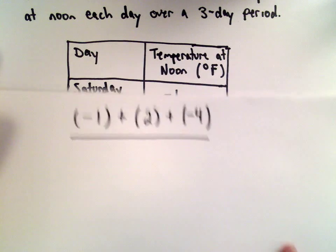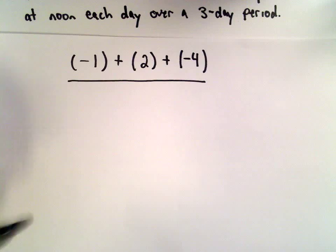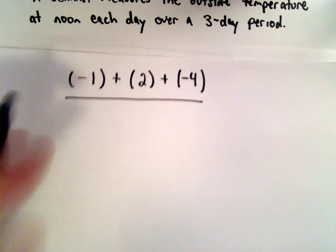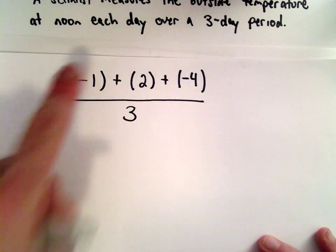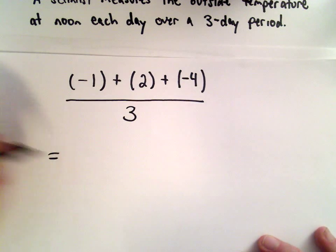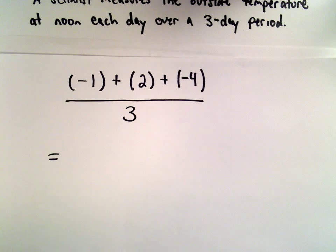We divide that by the number of readings, or the number of temperatures taken. Well, we did this over the course of three days, so we'll divide by three. Again, we've got one, two, three temperatures taken. And now we'll just simplify.